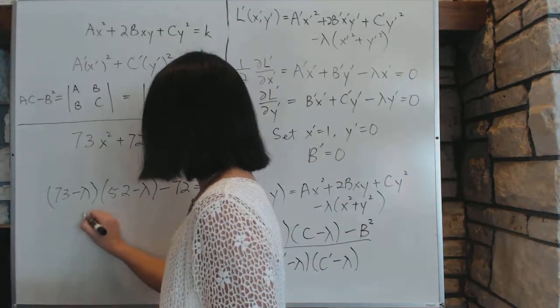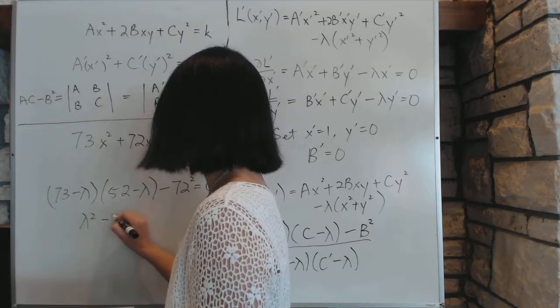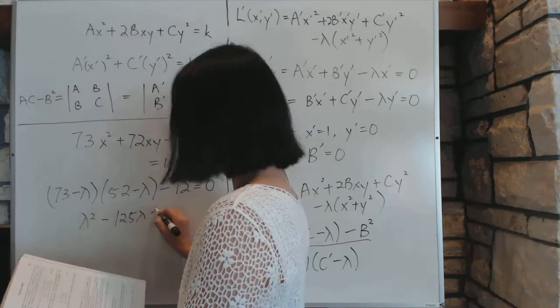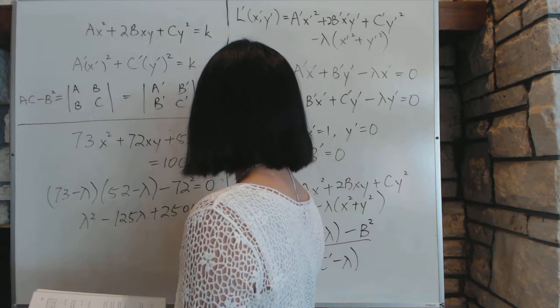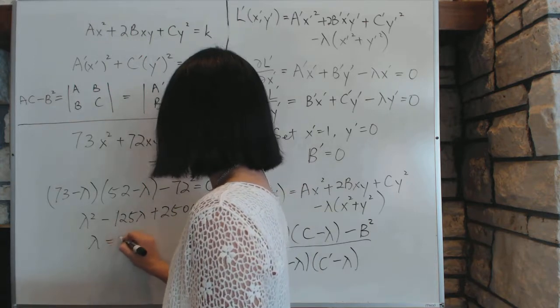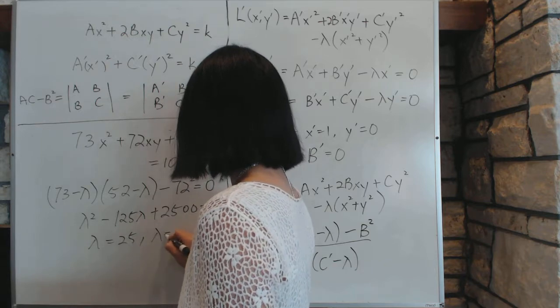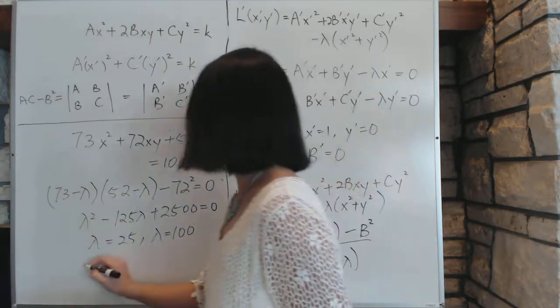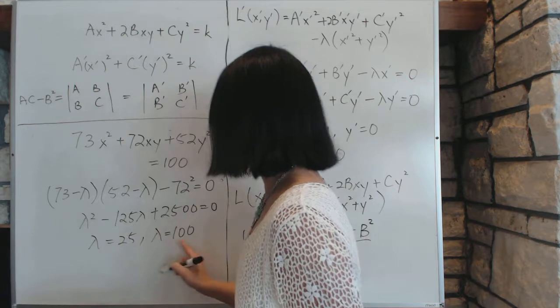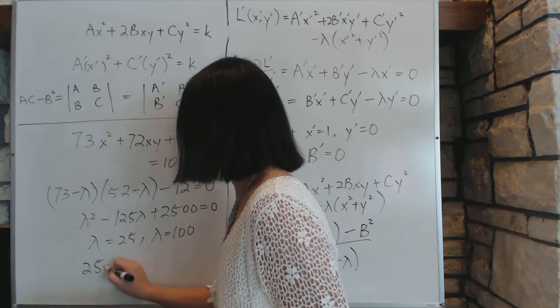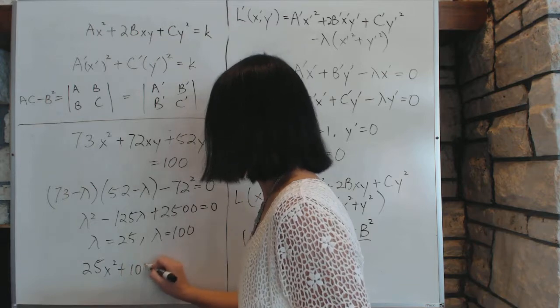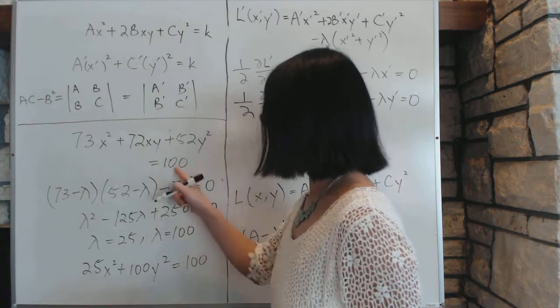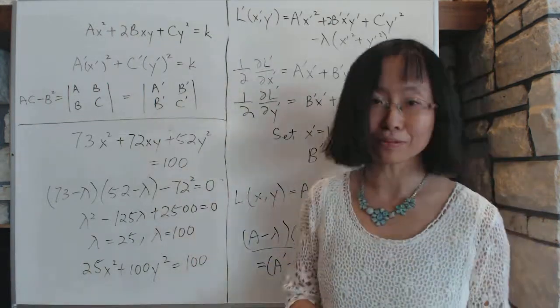Now by the time you do some calculator work, you will get something like this: lambda squared minus 125 lambda plus 2500 equals zero, which will give you the solution of lambda equals 25 and lambda equals 100, which means this equation, this particular ellipse, simplifies into 25 and 100. Doesn't matter which one's which, you just do 25x squared plus 100y squared, the middle term has disappeared, and equal to 100 at the end. And of course that can be further simplified to be a very simple ellipse.